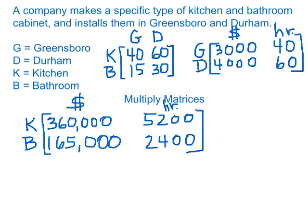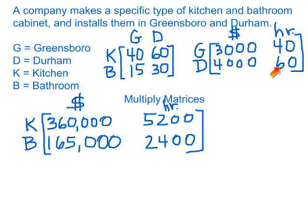What's the logic in the matrix multiplication we just did? The $360,000 came from the first row times the dollars column: 40 kitchens in Greensboro at $3,000 each plus 60 kitchens in Durham at $4,000 each — that's the total money spent on kitchens. Similarly, the 5,200 is total hours spent on kitchens, the next entry is dollars spent on bathrooms, and the last is hours spent on bathrooms.